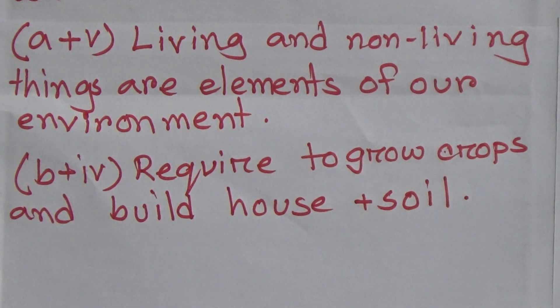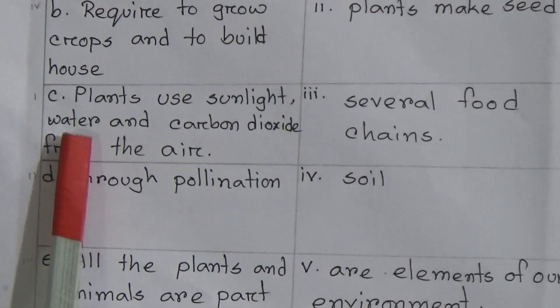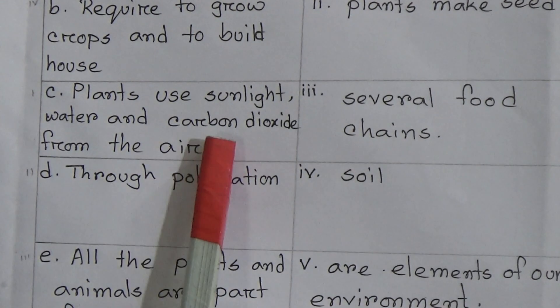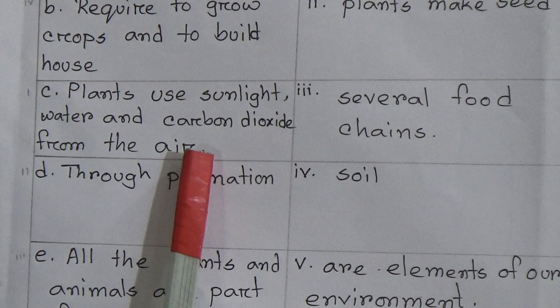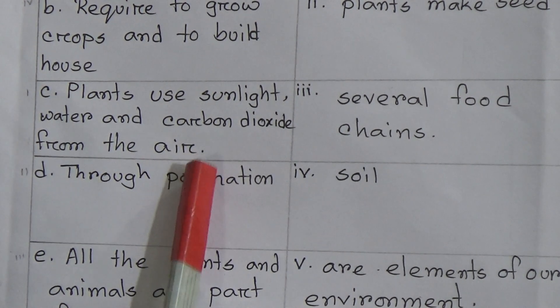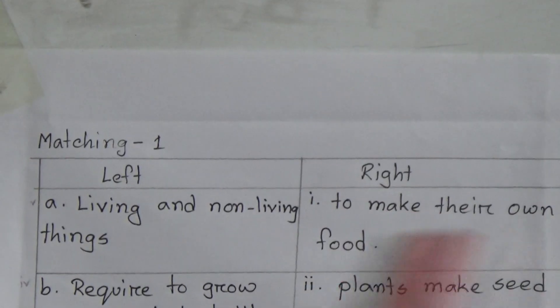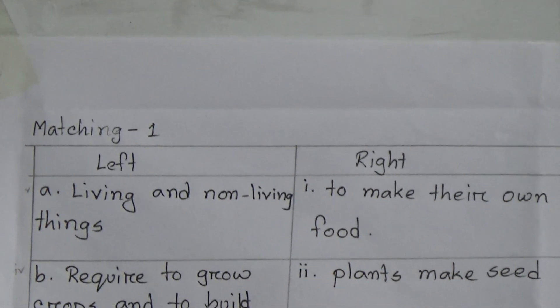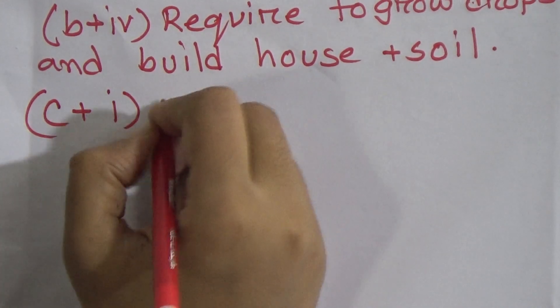Now the next one: C — plants use sunlight, water and carbon dioxide from the air — it will match with 1, to make their own food. That means C matches with 1.